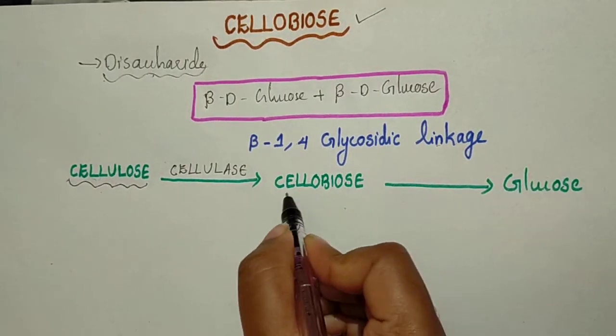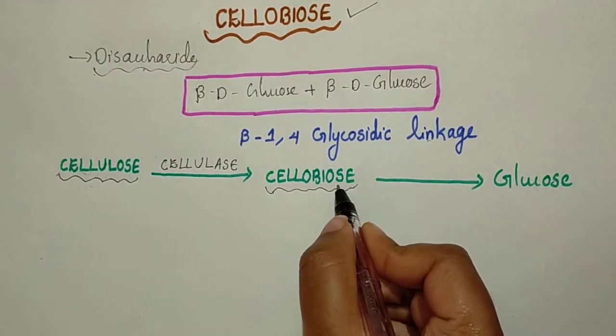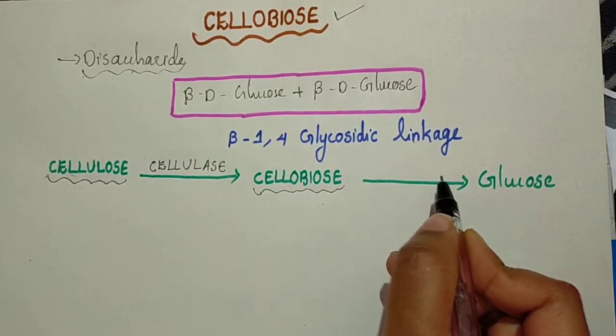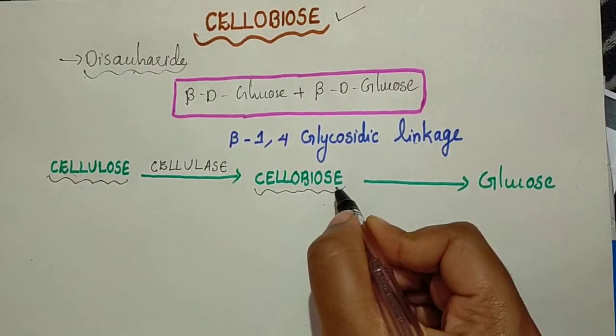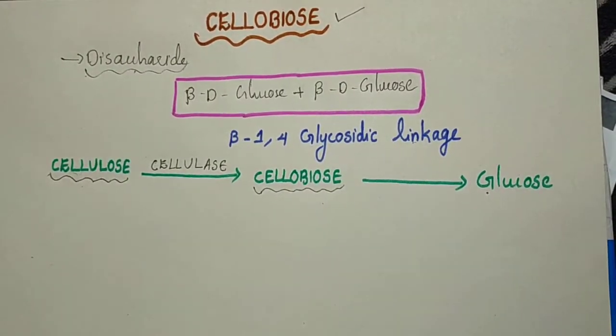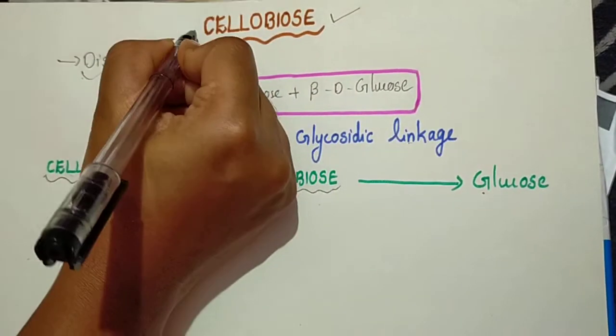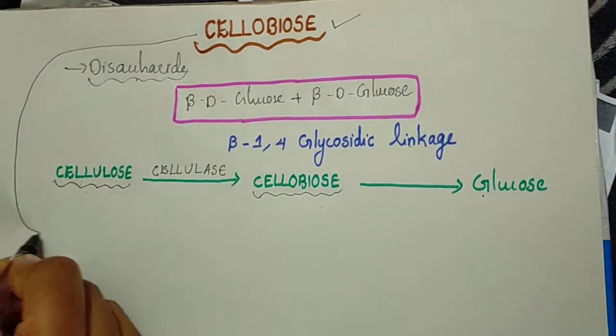chains of glucose units that is known as cellobiose. The cellobiose is further degraded or further attacked by these hydrolytic enzymes to produce monomeric glucose units. Now I will show you how to draw the structure of cellobiose in a very simple way.